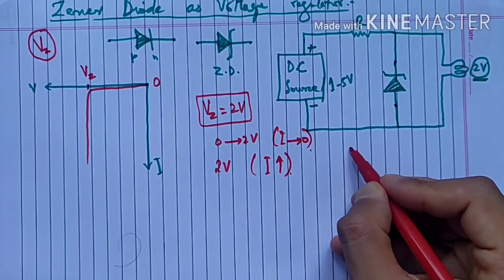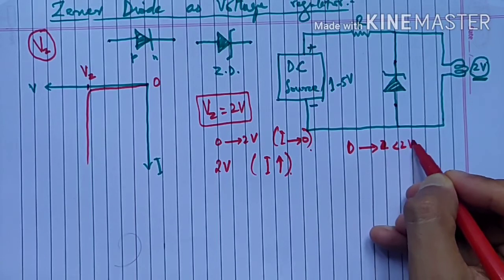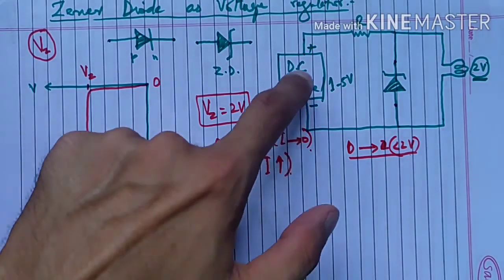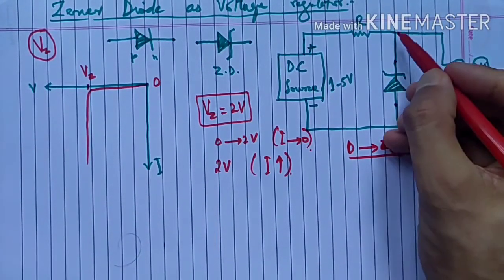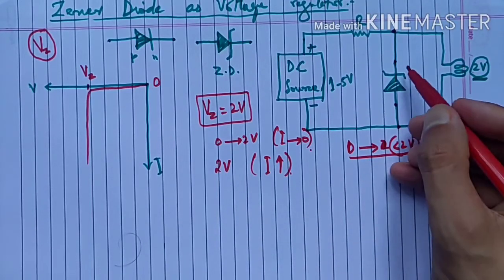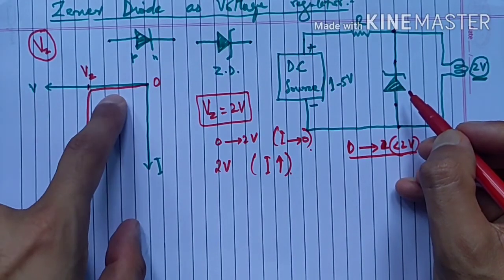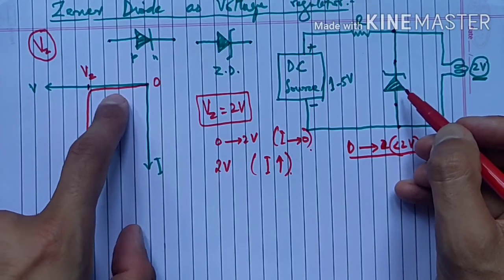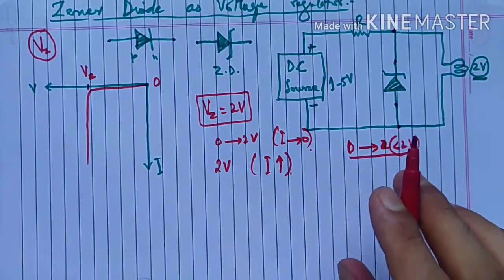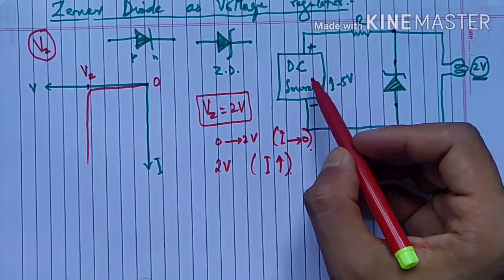पहला case: अगर zero से लेके two volt से less, यानि one point eight, one point nine तक voltage है DC source का, तो उस situation में क्या होगा। इस terminal और इस terminal के बीच less than two volt का voltage है तो यह वाला zener diode conduct नहीं करेगा, because अभी zener voltage से कम voltage है यहाँ। Current का minute flow होगा यहाँ से zener diode के through, तो maximum amount of current will flow through the bulb and it will glow। तो आपका load काम कर जाएगा, चल जाएगा क्योंकि two volt से less है।